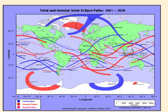The last eclipse was just a month or so ago, over here on the right side of the map — it was in Asia, in China and Japan. That is last month's eclipse in July.